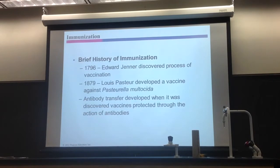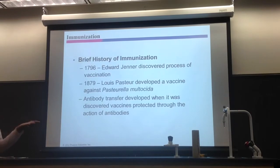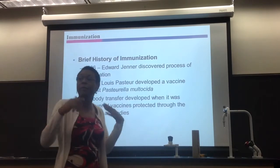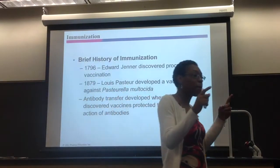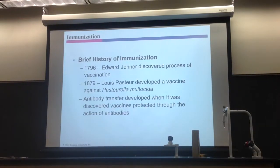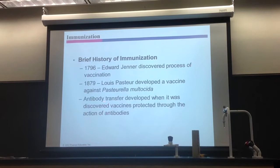Not too long after that, people realized you can actually use antibodies to give people immunity. Pasteur and Jenner used actual organisms to stimulate immunity, but people then realized you don't need the organism — all you need is some antibodies to give someone immunity against that pathogen. That is passive immunity, because you're using antibodies to do it.